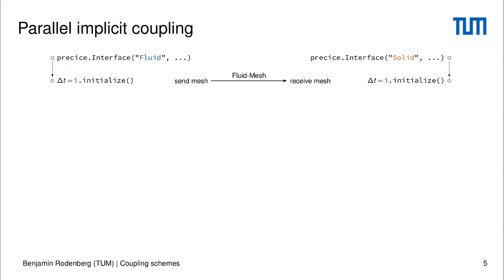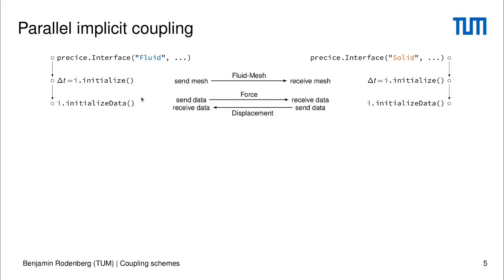My first example will deal with the normal parallel implicit coupling. Here we have two solvers, a fluid and a solid solver, like in fluid-structure interaction. Our first call to PreSize initialize will synchronize these two solvers and, if necessary, exchange the mesh. After that, we have the possibility to initialize data — the fluid solver provides some initial forces for the solid solver and the solid solver provides some initial displacement for the fluid solver.